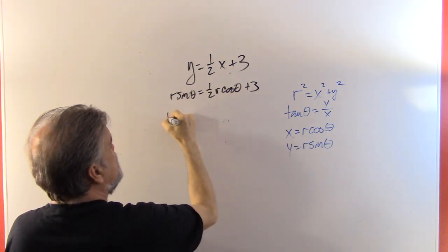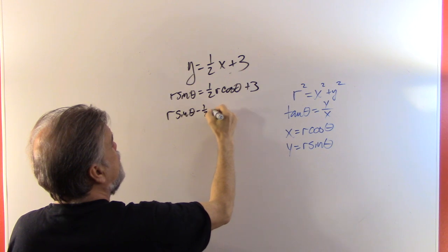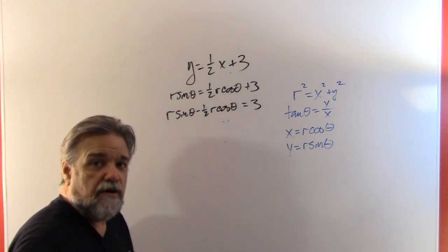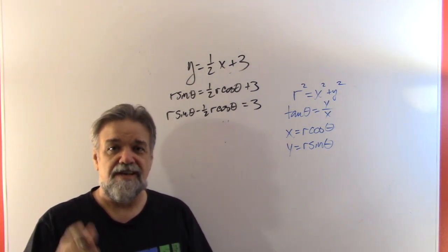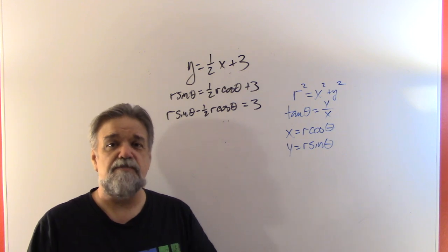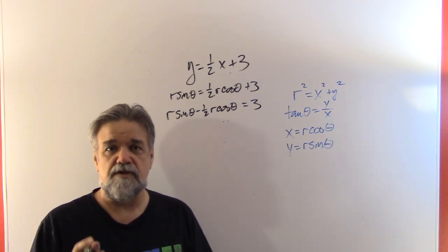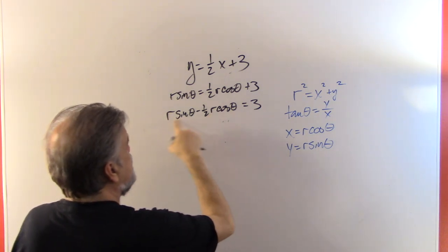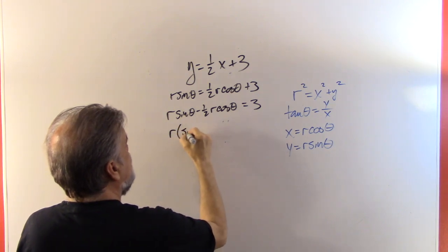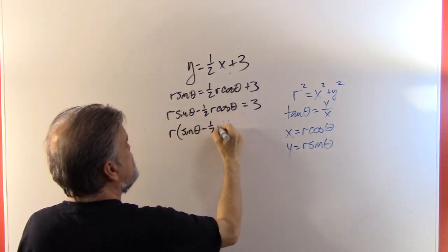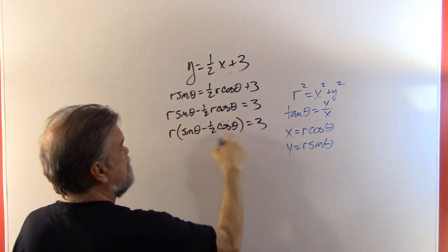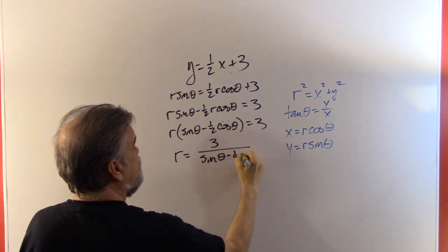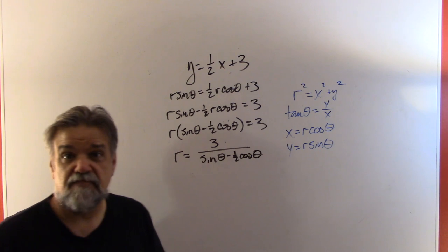And I'm going to say r times the sine of theta equals 1 half times r cosine of theta plus 3. And let's get that over on this side. So we have r sine of theta minus 1 half r cosine of theta equals 3. And remember, I want to solve for r. When you're writing equations in polar coordinates, generally your independent variable is going to be theta and your dependent variable is going to be r. So I'm just going to factor out an r here and I get this. And so then just divide by that. So r equals 3 divided by the sine of theta minus 1 half cosine of theta. There you go. There's your line.